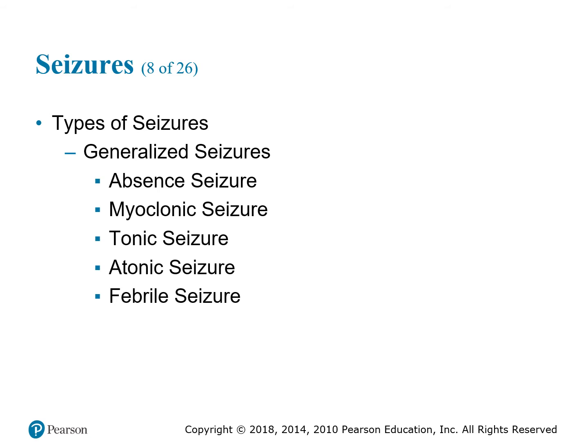Other generalized seizure types include absence seizures, which look like a person daydreaming and can be mistaken for inattention. Myoclonic seizures involve jerking motions or convulsions. Tonic seizures — the patient becomes completely rigid. Atonic seizures — without muscle rigidity, so the patient becomes limp. Febrile seizures present like a classic generalized grand mal seizure but are brought on by a fever.